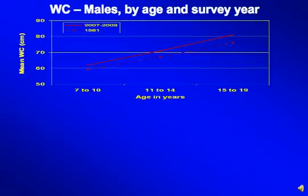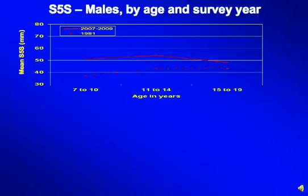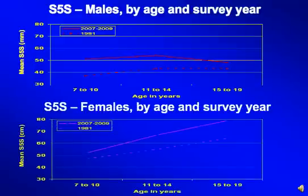Looking at waist circumference, the same pattern holds for both males and females. Examining sum of five skinfolds from this survey, the same pattern again is evident. For 7 to 10 year old boys, skinfold measurements went from 37 millimeters to 51 millimeters across one generation — nearly a one-third increase in subcutaneous fat. The same pattern is seen in females, representing very significant and meaningful changes in morphological fitness across one generation.